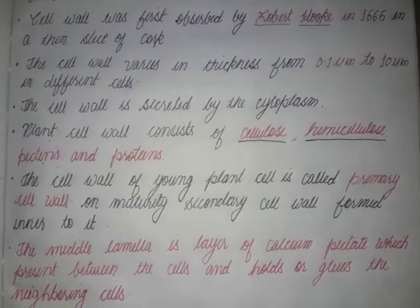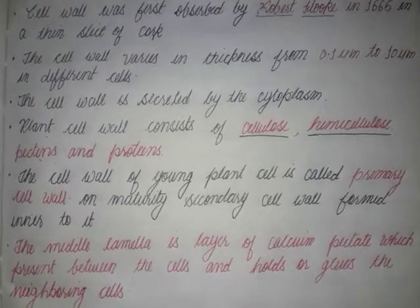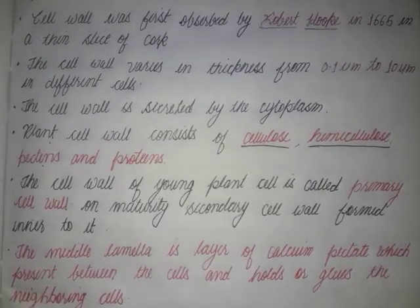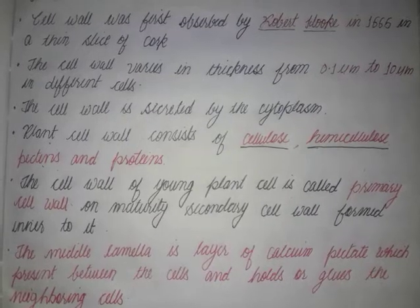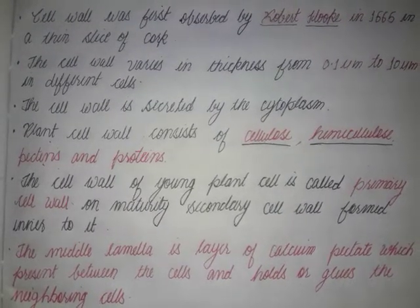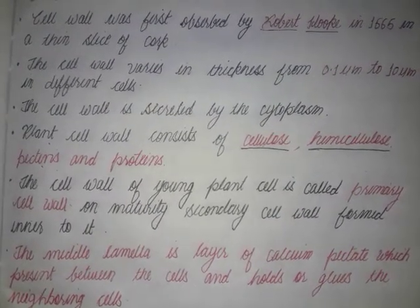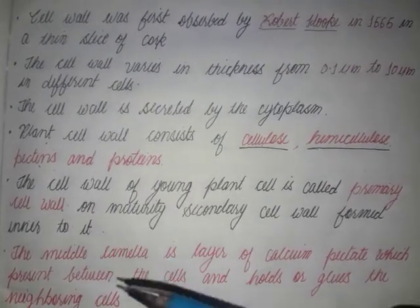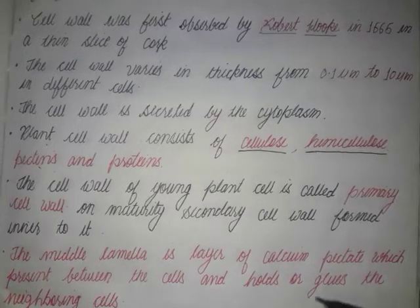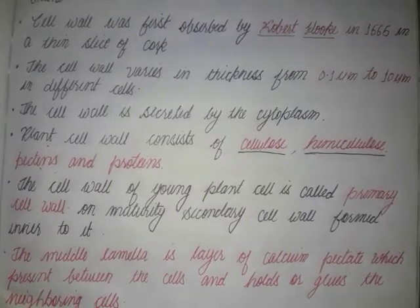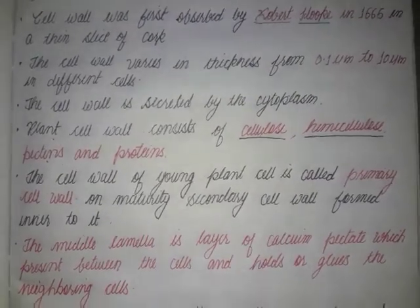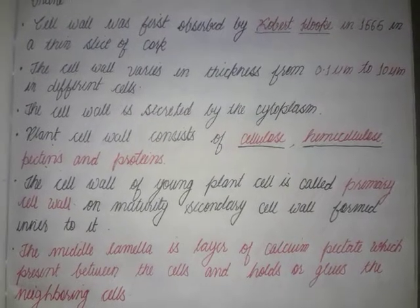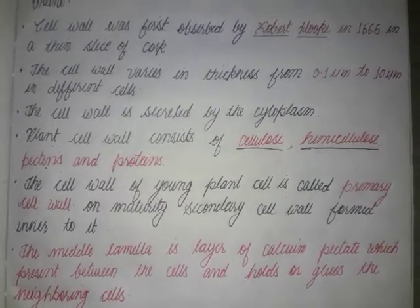Now let's talk about the primary, secondary, and tertiary cell wall. The cell wall of the young plant cell is called the primary cell wall. When the plant is in its initial stage, growing stage, or young stage, the cell wall is called the primary cell wall.